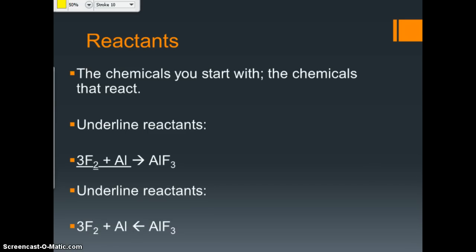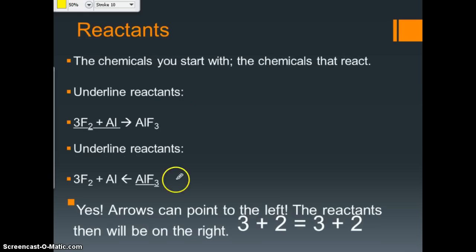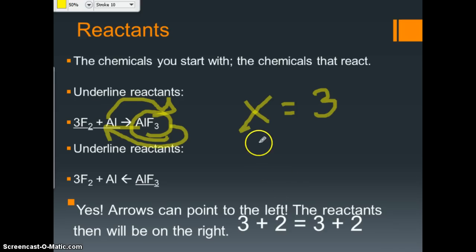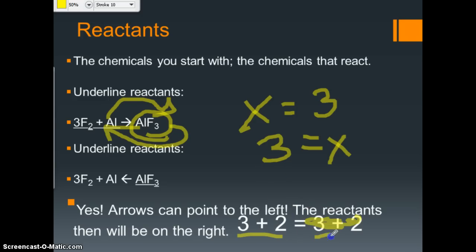Now underline the reactants in this next example. The reactants are on this side of the arrow — and yes, arrows can point to the left, because some reactions reverse. Once you have all the products made, the reaction can turn around and go back into the original reactants. Just like in math class: you can write x equals 3, or you can write 3 equals x. You can write 3 plus 2 or 2 plus 3 — they're the same thing. Whatever is before the arrow is reacting, so that's your reactant.